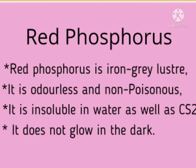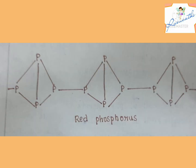Red phosphorus. Red phosphorus is obtained by heating white phosphorus at 573 Kelvin in an inert atmosphere for several days. It possesses iron gray luster and is non-poisonous and odorless. Red phosphorus is insoluble in water as well as carbon disulfide and it does not glow in the dark. Also, red phosphorus is a polymeric structure with P4 tetrahedral linked together.